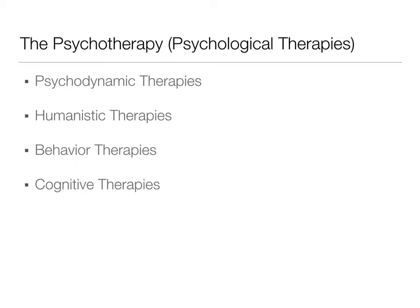The four main therapies we're going to talk about today are psychodynamic therapies, humanistic therapies, behavior therapies, and cognitive therapies. There are more kinds of therapies out there, but these are the four we'll focus on in this class.